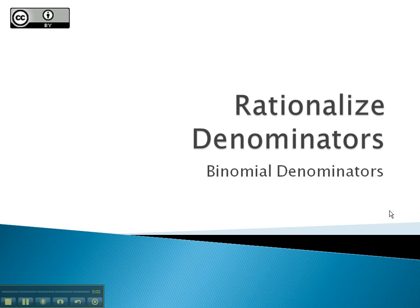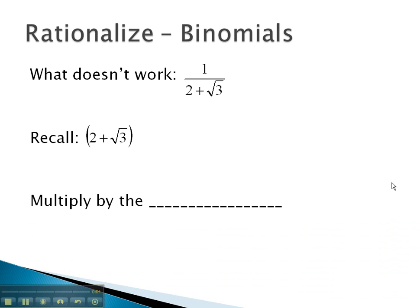In this video, we will look at rationalizing denominators that have a binomial in the denominator. First, let's notice what does not work. We can't simply multiply by the square root because we would be forced to distribute it, and so we would have 2√3 in the denominator, and that would not accomplish our goal.